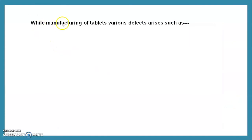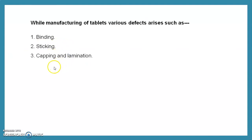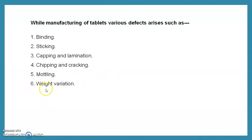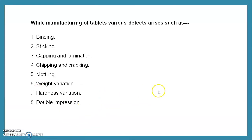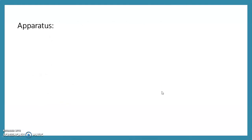While manufacturing tablets, various defects can arise. The different defects include: binding, sticking, capping, lamination, chipping, cracking, molding, weight variation, hardness variation, double impression, and tablet expansion.